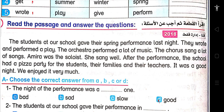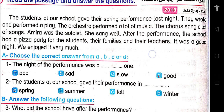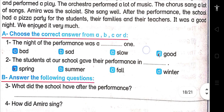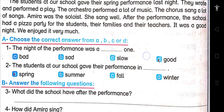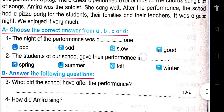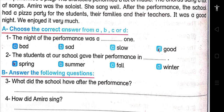Choose the correct answer. Number one: The night of the performance was a good one. Number two: The students at our school gave their performance in spring. Number three: What did the school have after the performance? The school had a pizza party for the students, their families, and their teachers. Number four: How did Amira sing? Amira sang well.